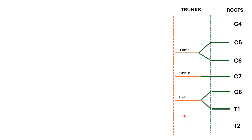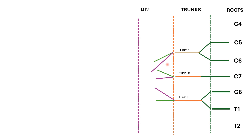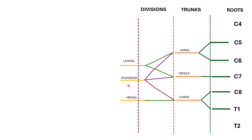These trunks divide to form the divisions. Each trunk forms two divisions: anterior and posterior. The green here represents the anterior and the purple represents the posterior divisions. From the divisions, we have the cords. The anterior divisions of the upper and middle trunk join to form the lateral cord. The anterior division of the lower trunk continues as the medial cord. The posterior divisions of all three trunks join to form the posterior cord.